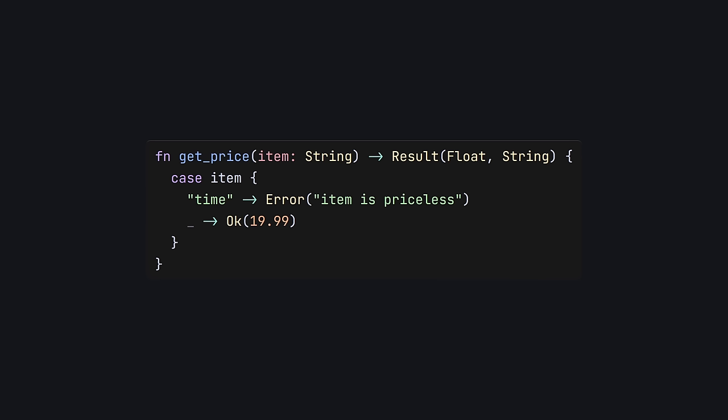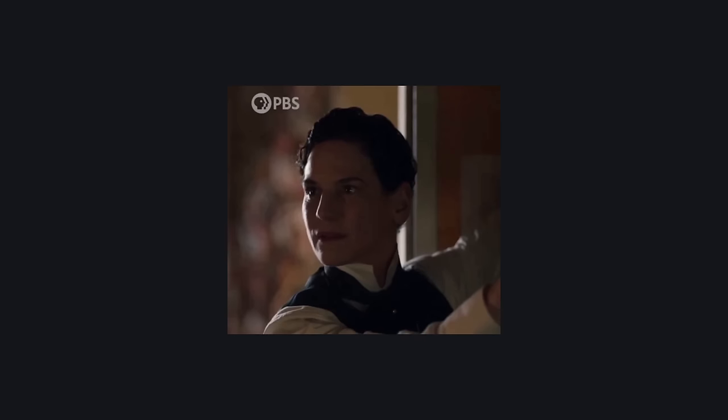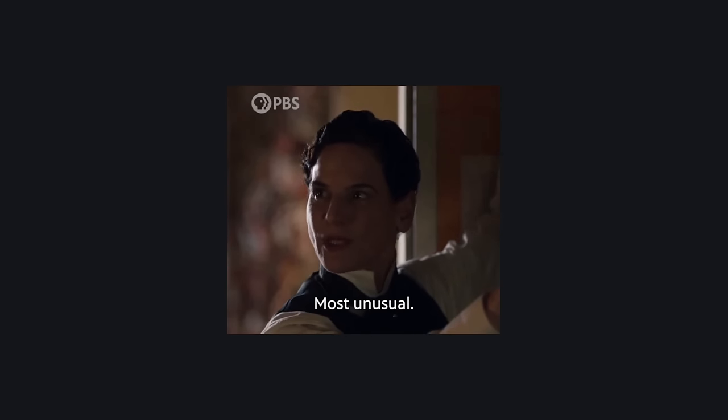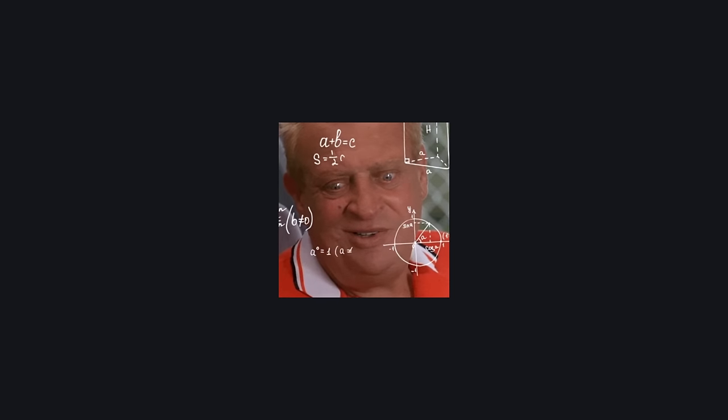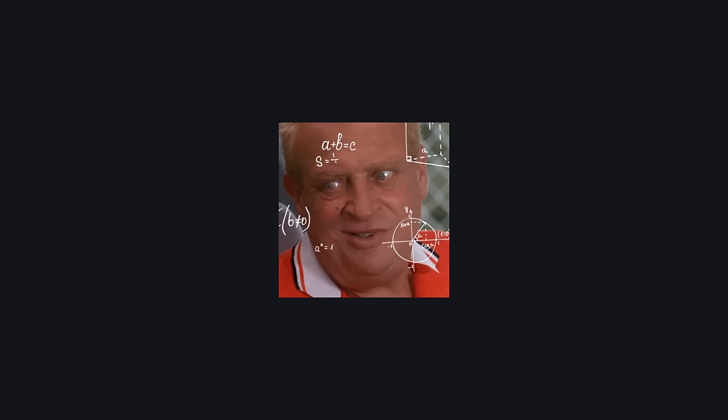This function calculates the price of a given item, but can fail if the item is priceless. Instead of exploding or throwing an error for someone else to catch, we return the error from the function as part of our result. If you've never worked with errors as regular values before, this may seem strange, but systems that treat errors as special cases, using an exception system with try-catch for example, add complexity to our code.